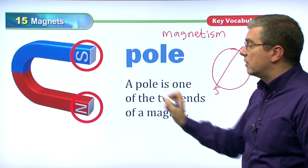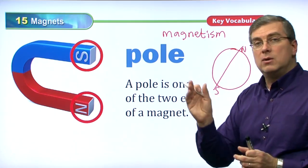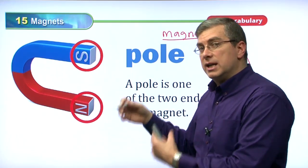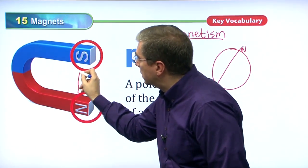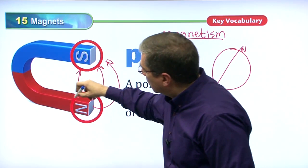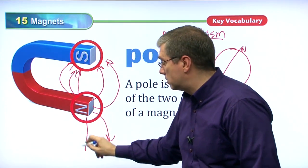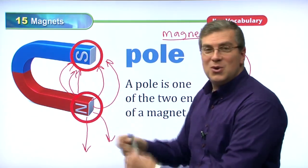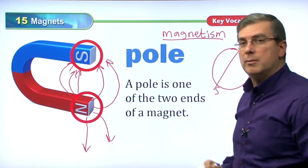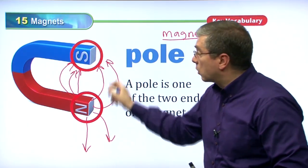A pole is one of the two ends of a magnet. Some pieces of iron were actually magnets and would point north. The force or energy in a magnet is always flowing from the north to the south. The energy is going like this — we can't see it, but the north is emitting the magnetism, and the south is attracting it, picking it up. Whether it's a horseshoe shape or a bar shape, that's the way the force works.